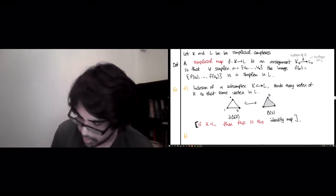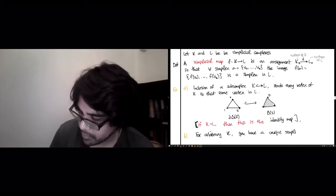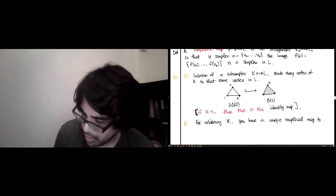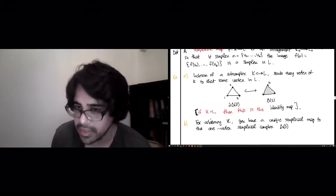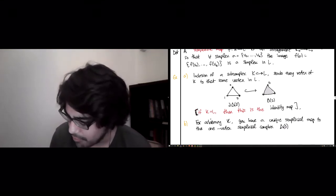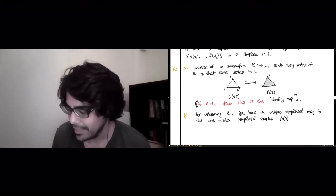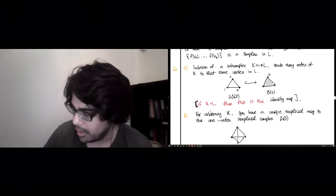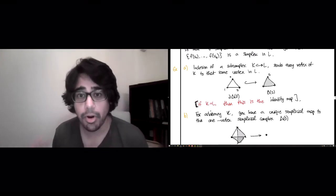So at the other end of the spectrum, for arbitrary K, you have a unique simplicial map to the one-vertex simplicial complex. I guess we've given this a name, delta zero. This is the solid zero simplex. So what do you do? You just take every vertex of K, and there's only one vertex to send it to. Whatever your K is, it could be this tetrahedron with some things filled and other things not. Who cares? All of this would get sent to a single vertex. And that's a perfectly good simplicial map.